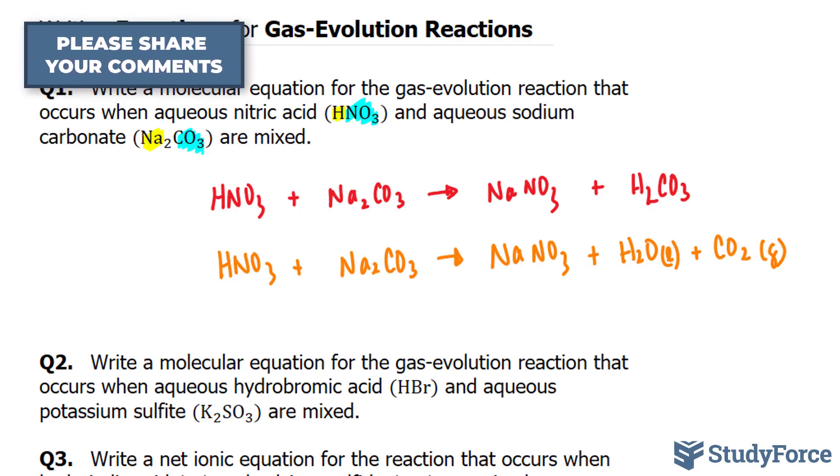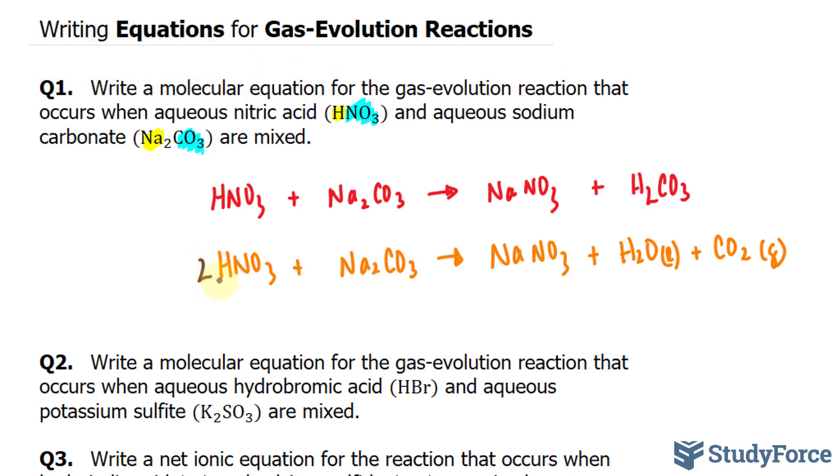Lastly, we have to balance this chemical equation, and that can be done quite easily by placing a 2 in front of this compound, which balances out the hydrogens, and placing a 2 in front of this compound, which balances out the sodiums.